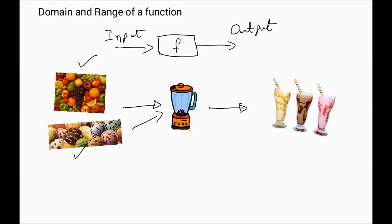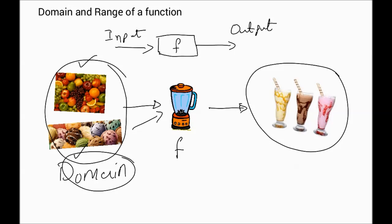So that gives rise to the concept of the domain. This is the domain of this function. Whatever is valid input is called the domain of the function. Here's your function and it takes this. This is the domain of the function. All of this here is the domain of the function. And here is the range of the function.